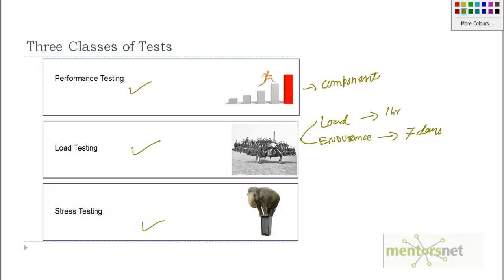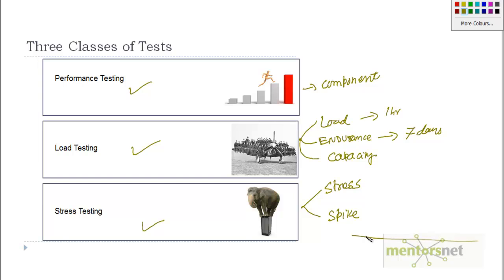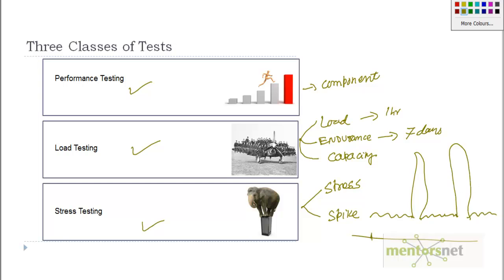Another kind of test is capacity testing, which is similar to load testing but the goal is to predict resource usage. In stress testing, we apply extreme load. There is also spike testing — where alongside a general baseline load, we suddenly introduce a spike load, return to the general load, then spike again — to see how the system responds to sudden surges.